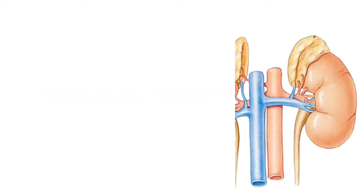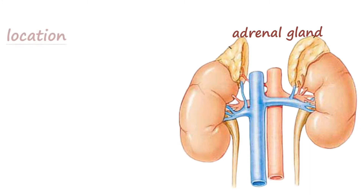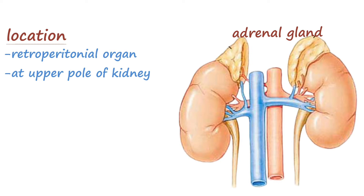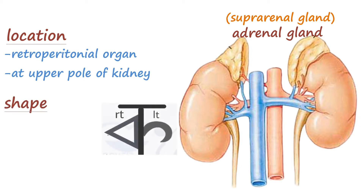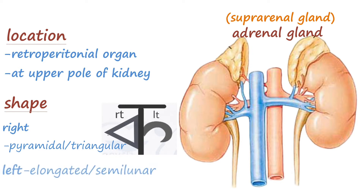The adrenal glands are two small organs located retroperitoneally at the upper poles of the kidney, thus also known as suprarenal glands. These two adrenal glands vary in shape. You can remember it as the letter 'core': the right adrenal gland is pyramidal or triangular in shape, whereas the left adrenal gland is elongated or semilunar in shape.